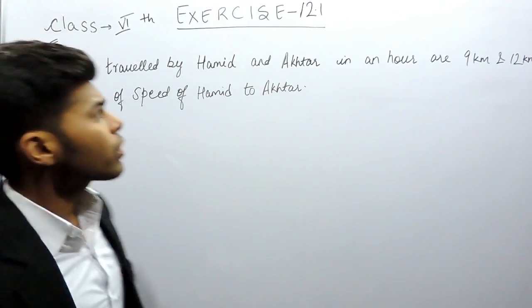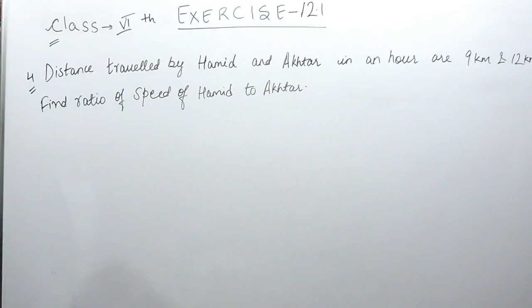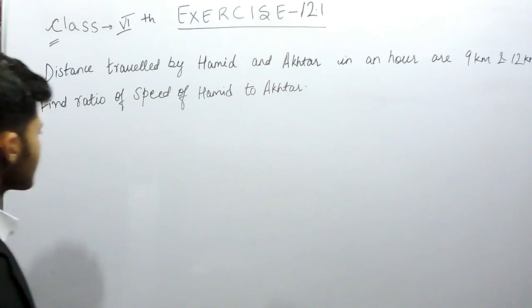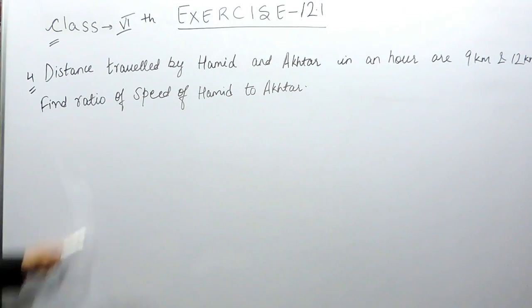Hello everyone, this is the fourth question of exercise 12.1. The question says that the distance traveled by Hamid and Akhtar in an hour are 9 kilometers and 12 kilometers respectively. We have to find the speed of Hamid